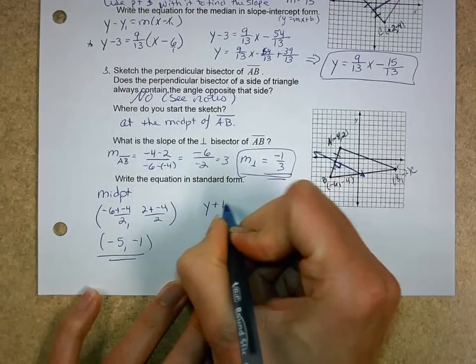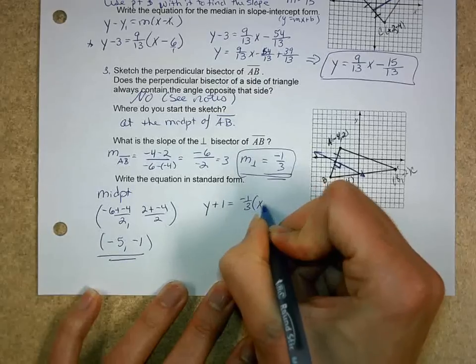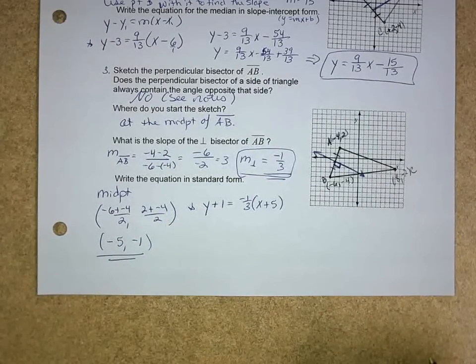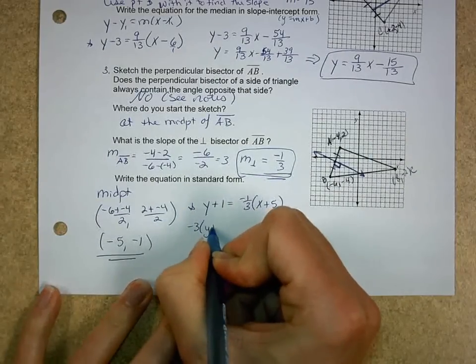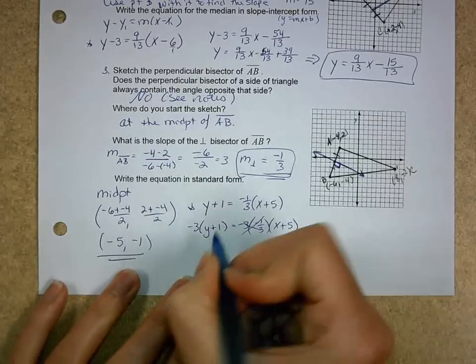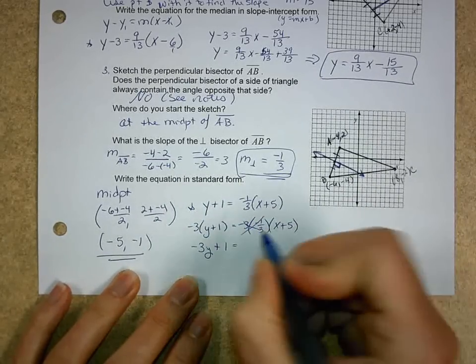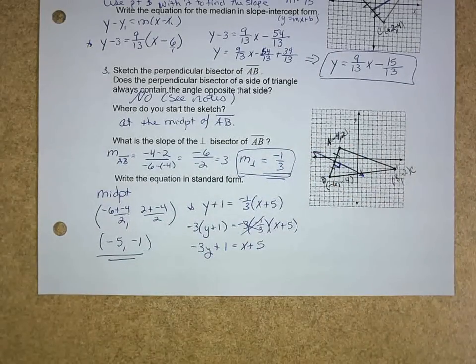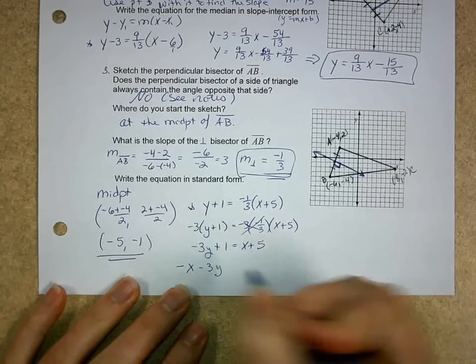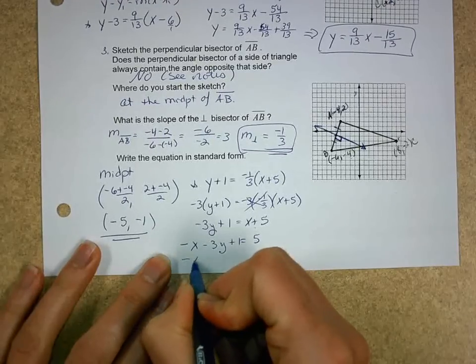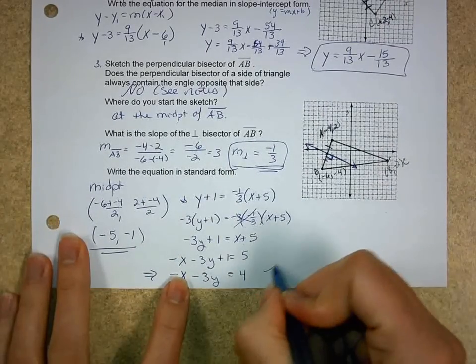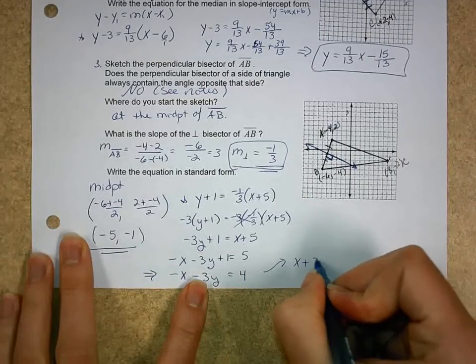Now I need to change it to standard form. Get rid of the fraction. I think the fastest way for this one is to multiply both sides by -3. So when I do that, notice on the right, that simplifies out to be a 1. Over here, I get -3y plus 1 is equal to x plus 5. Remember, standard form has no fractions. That's why I got rid of it. Also, remember, a has to be positive. b and c can be negative. So I'm going to move the x over, and I get -x - 3y + 1 equals 5. I move the 1 over. I get -x - 3y equals 4. Is that in the correct form? No, because I have a negative value in front of the x. So what do we do? Multiply everything by a negative 1. So it's x + 3y equals -4.